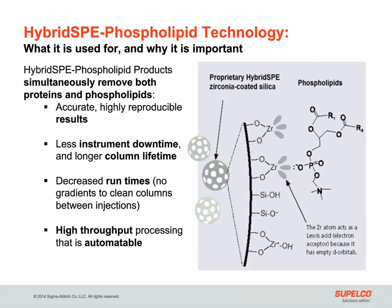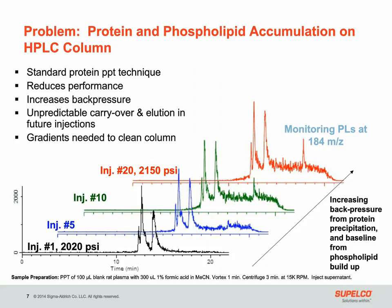So how does the hybrid SPE phospholipid material work? The surface of the silica-based packing material is bonded with zirconia. The zirconium atom acts as a Lewis acid, or electron acceptor, because of its empty d orbitals. This specifically retains the Lewis base phosphate group of the phospholipid, completely removing them from the sample. In addition to removing phospholipids from the matrix, proteins are precipitated, removing them from the sample as well.